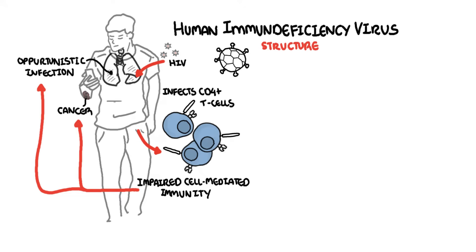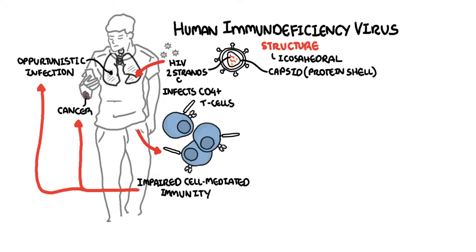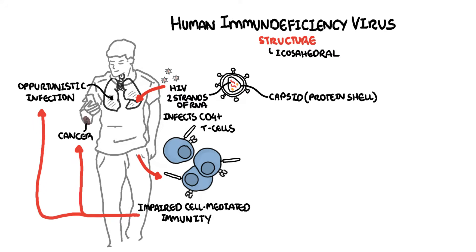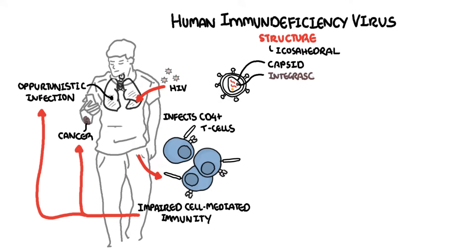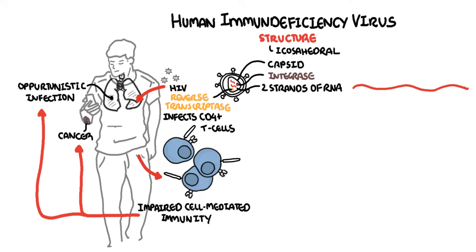The structure of the virus is icosahedral, meaning a polyhedron with 20 faces, with a conical capsid — a protein shell of a virus. The capsid contains two strands of RNA. The capsid also contains two enzymes essential for HIV replication: the integrase and the reverse transcriptase.